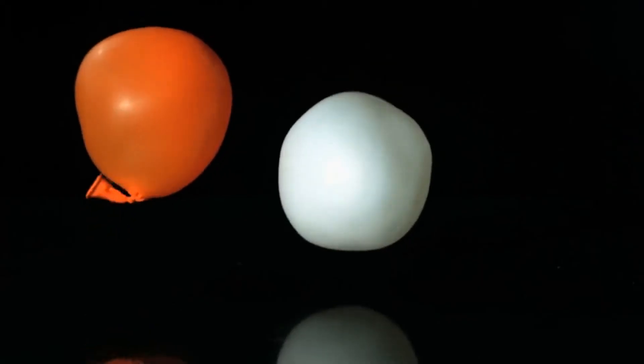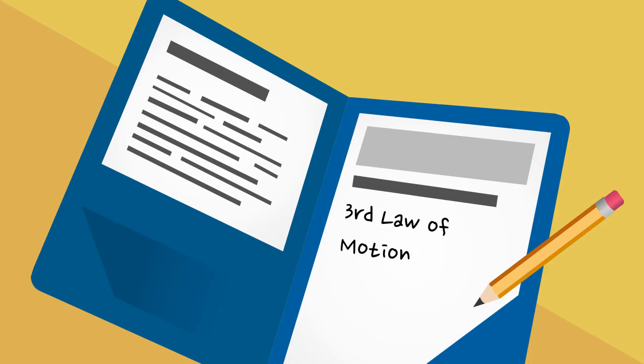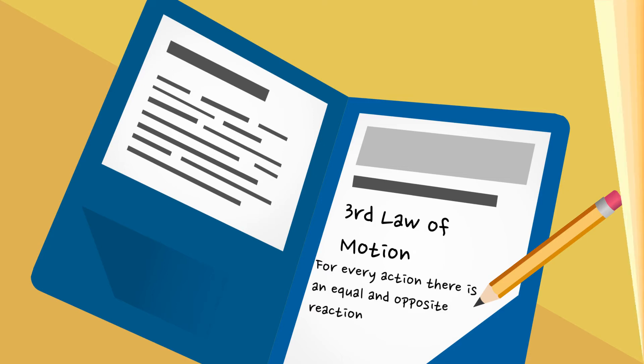So there we go — some real world examples of the third law of motion, which states that for every action, there is an equal and opposite reaction.